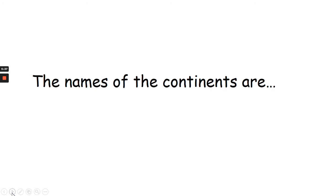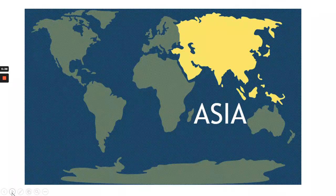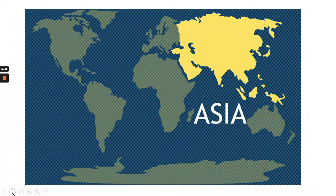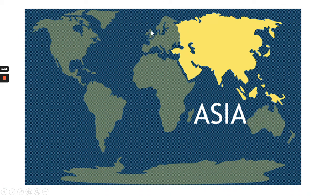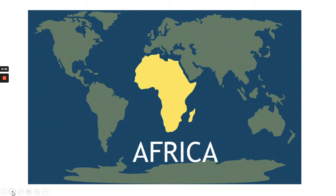The names of the continents. Here we go again — this time in yellow, you can see which part of the world the continent is on. Here we have Asia. And here's the United Kingdom. Here we have Africa.